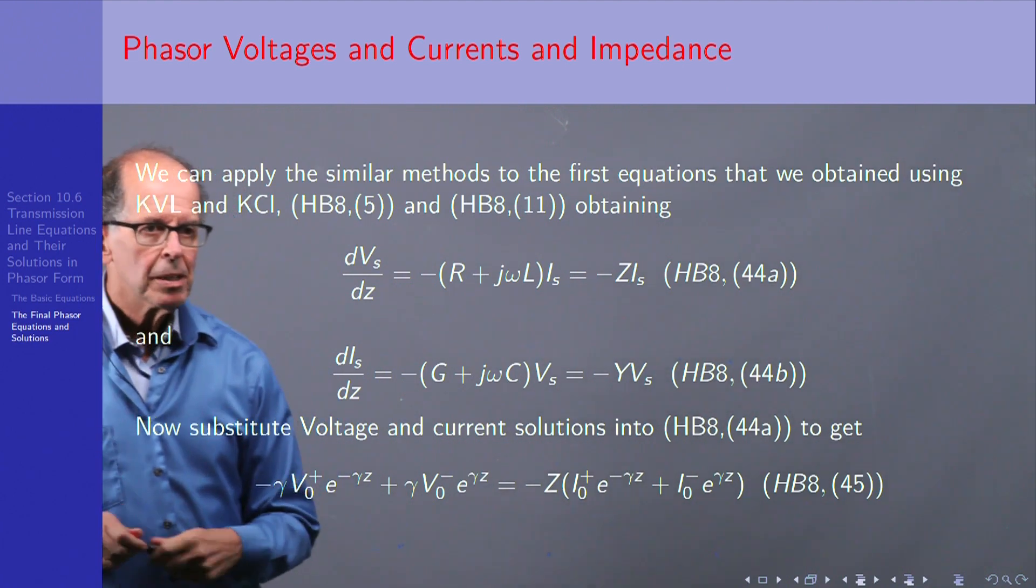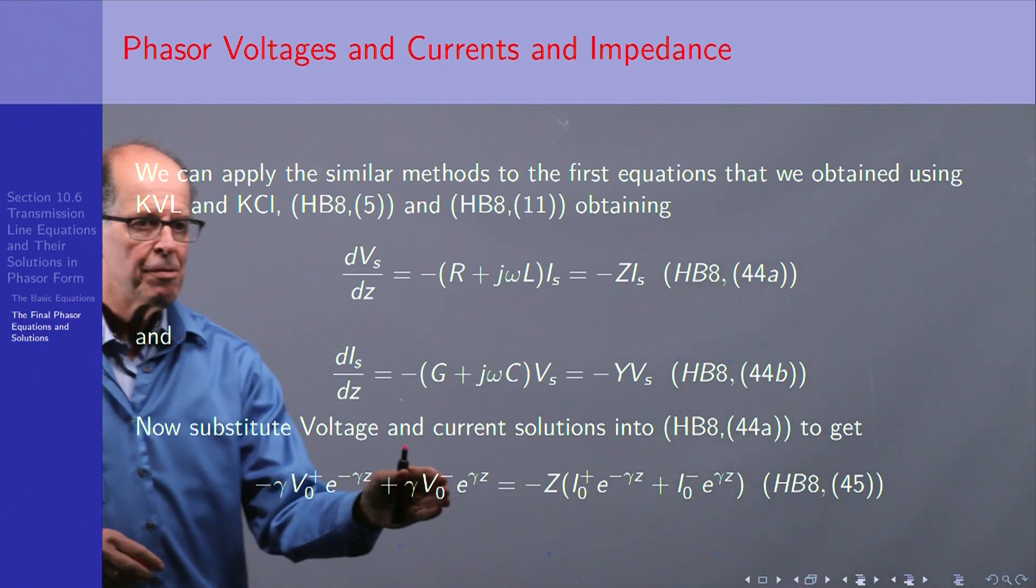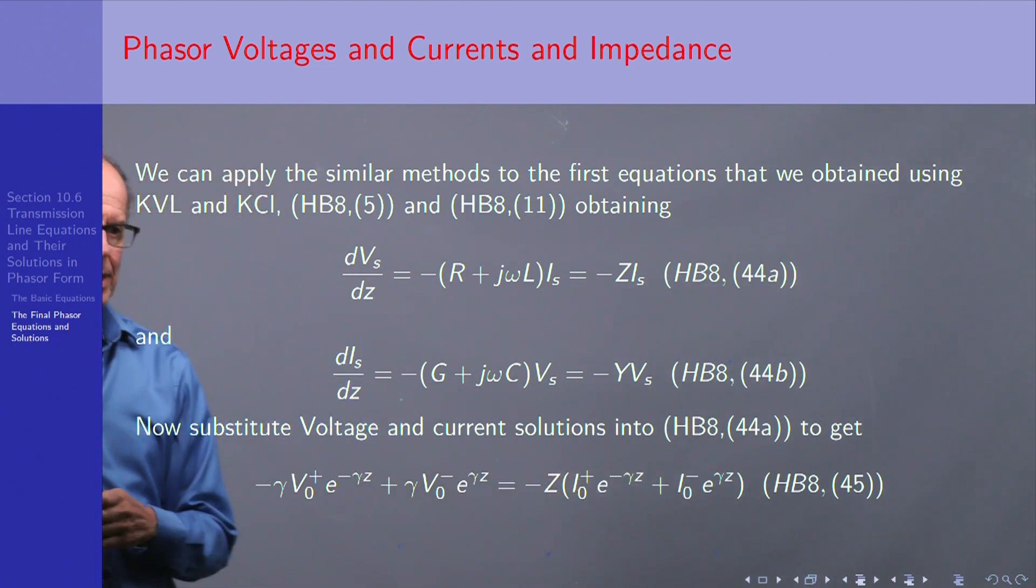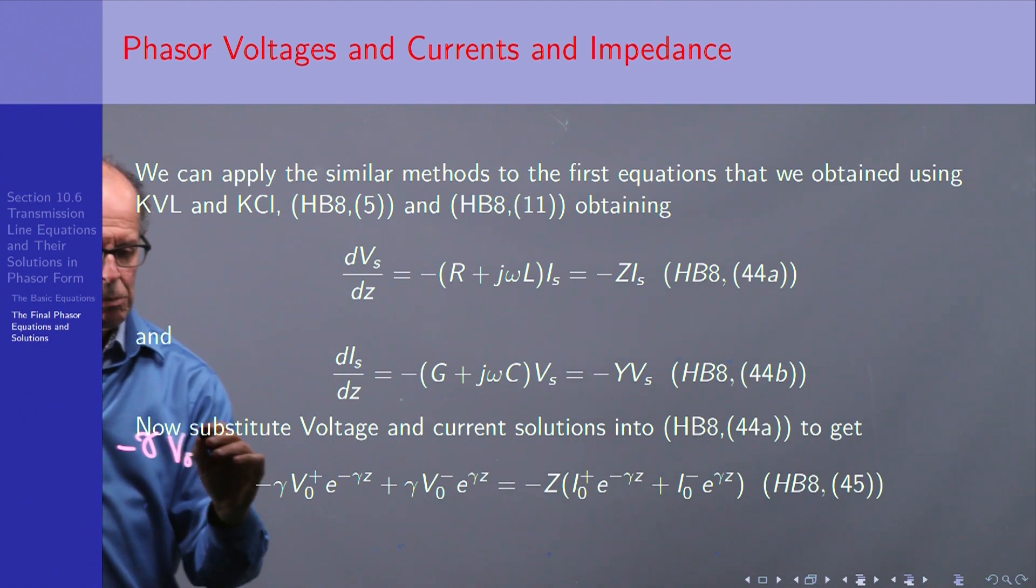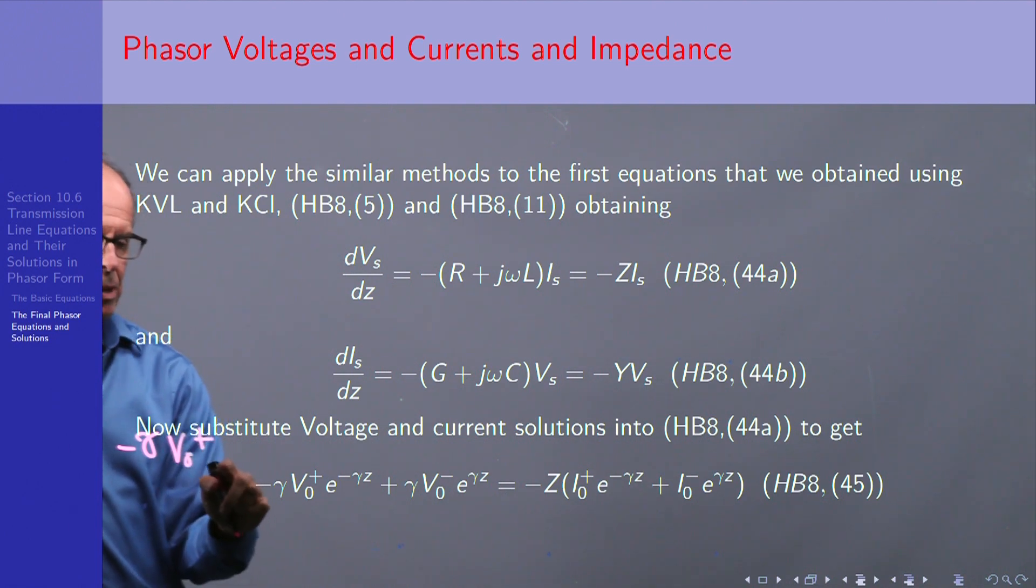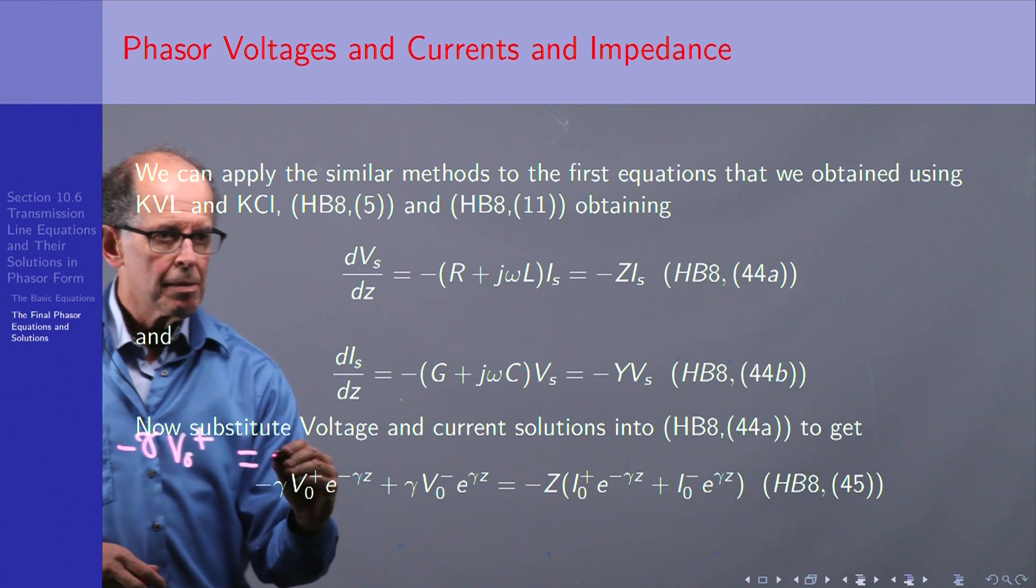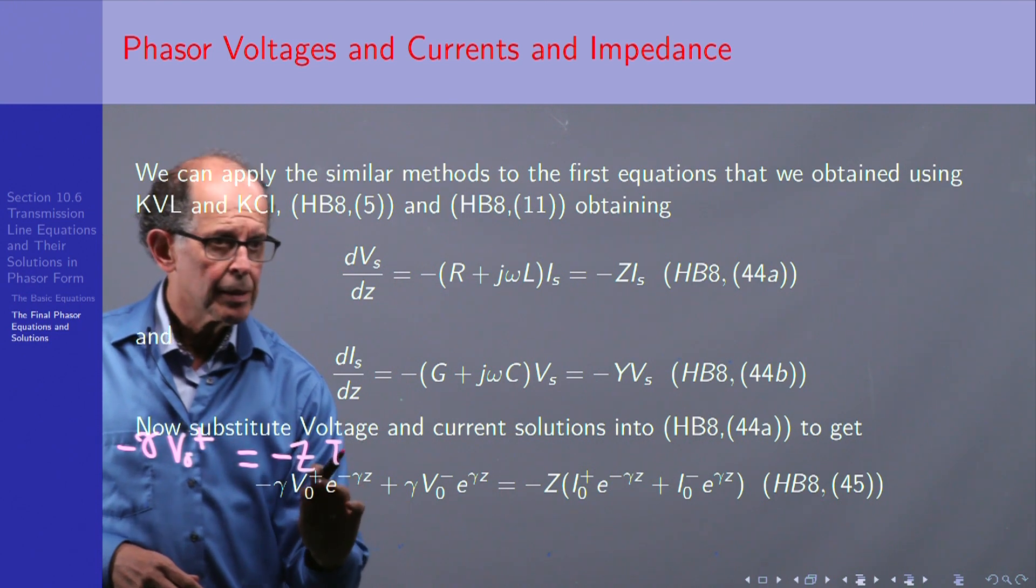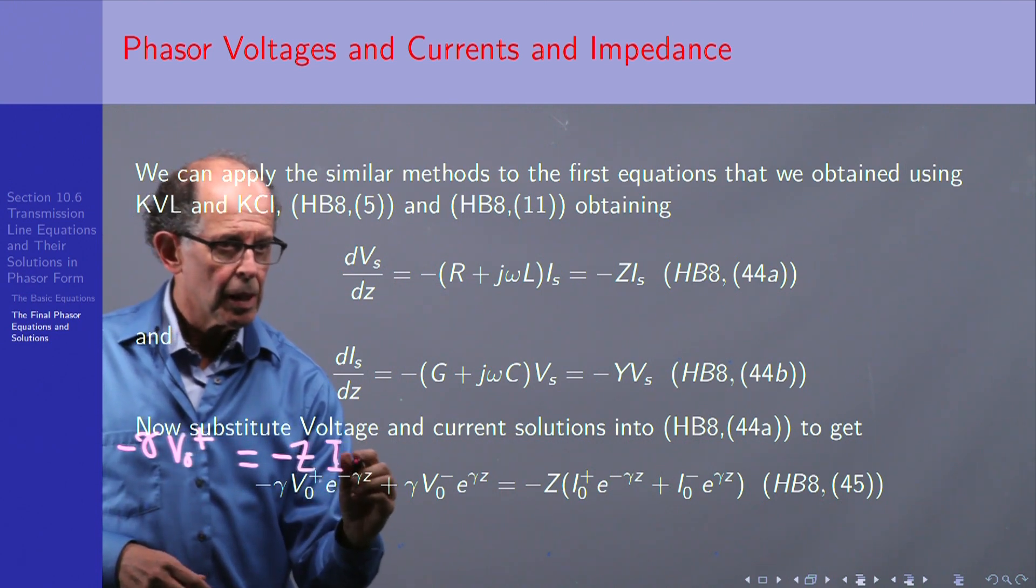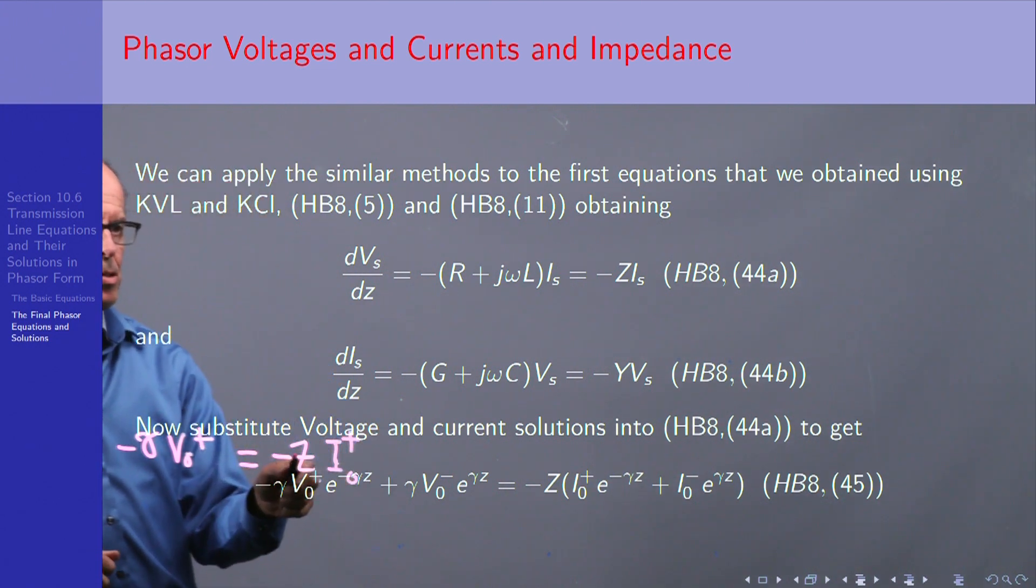Now, what we'd like to do is look at the ratio. For example, supposing there was no V⁻ and I⁻ wave, what would it look like? So let's do that. I'll do it quickly here. We can have minus γ V₀⁺, and that multiplies e to the minus γz. And that's equal to minus Z times I₀⁺. Now, what exactly is this?